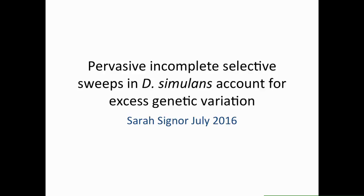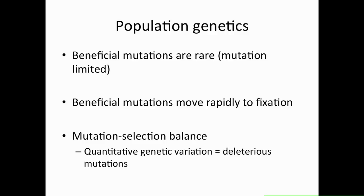There will be no phenotypes in this talk. I'm going to talk about some work I've been doing in Drosophila simulans as a post-doc in the lab of Sergei Nuzhin. The standard model of population genetics is that adaptation is mutation limited — populations are waiting for beneficial mutations to occur, and when they do, they move rapidly to fixation. Deleterious mutations are maintained through mutation-selection balance, and variation in quantitative traits is just the result of deleterious mutations still sorting in the population.